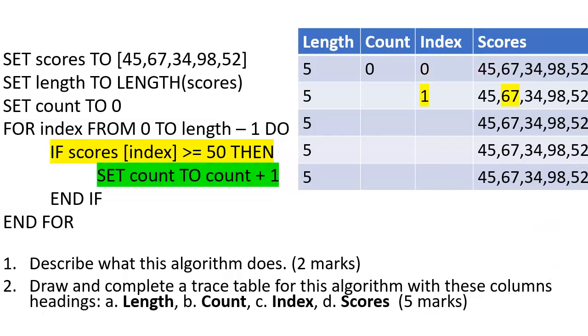Next index, index one, value 67. If scores index is greater than or equal to 50, so 67 is greater than or equal to 50, then set count to count plus one. That is now true, so I can add one to my count. Next index, I'm looking at index two there and it's 34, and that is therefore false, so 34 is not greater than or equal to 50, so count stays as one.